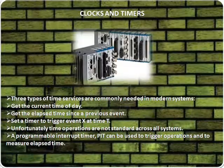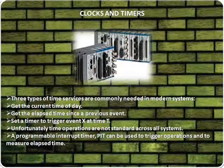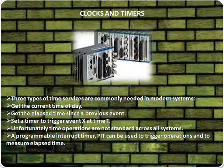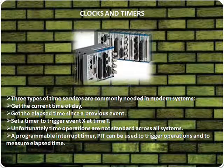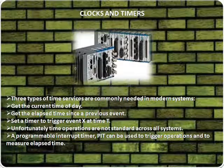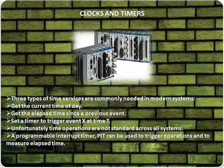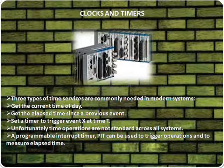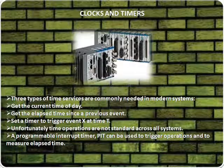Clocks and timers. Three types of time services are commonly needed in modern systems: get the current time of day, get the elapsed time since a previous event, and set a timer to trigger event X at time T. Unfortunately, time operations are not standard across all systems. A programmable interrupt timer (PIT) can be used to trigger operations and to measure elapsed time.